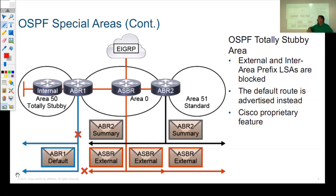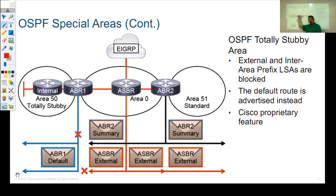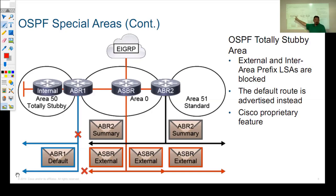This allows routers in area 50 to have the minimum amount of information possible in OSPF: a route to reach every single link in area 50, and a default route to get out. As noted, this is a Cisco proprietary feature, but the only router that has to be a Cisco router is the Area Border Router.